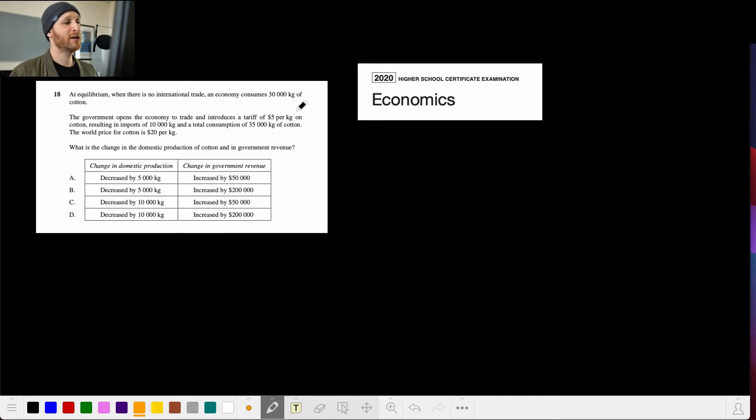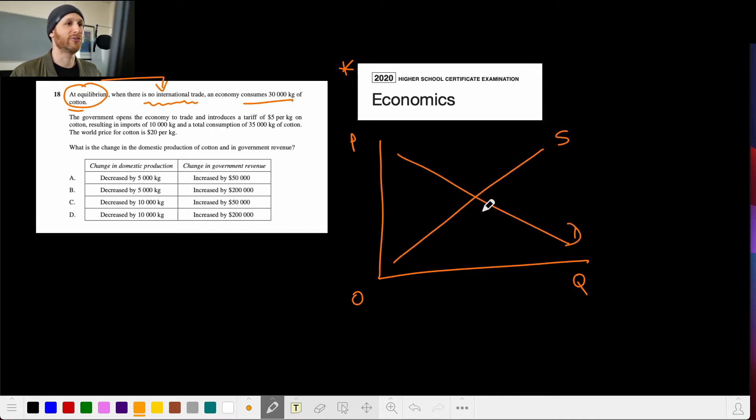So you can see here from the 2020 New South Wales HSC for Economics. So at equilibrium, it's really nice that they tell you that at equilibrium where there's no international trade, an economy consumes 3,000 kilos of cotton. So I'm just going to show my process. Not all of this I would do in the actual exam because I don't have all that time. So if I'm going to start, I've got price, and I've got quantity, and I've got zero. Then I've got supply, and I've got demand, obviously.